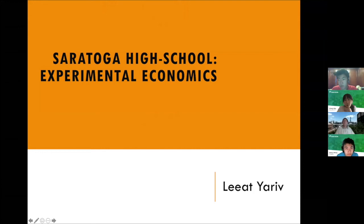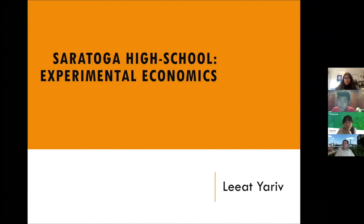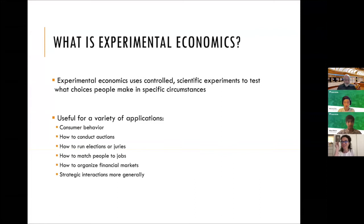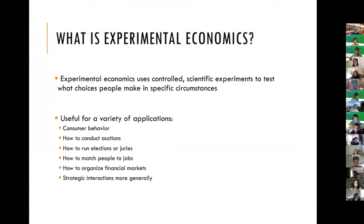Thank you. I'm going to tell you about experimental economics, which uses controlled scientific experiments to test what choices people make in various circumstances. It's useful for a variety of applications: consumer behavior, how people choose products in markets, how to conduct auctions like the ones Paul Milgram just described, how to run elections or juries, how to match people to jobs, how to organize financial markets, and strategic interactions in general. It's hard to think of a topic in economics that has been left untouched by experiments.